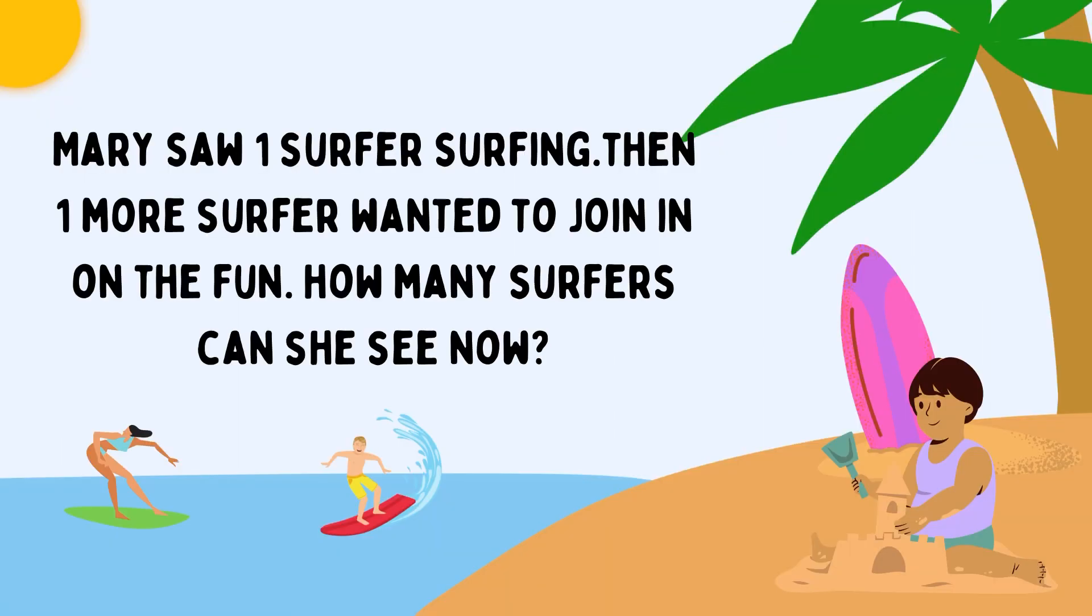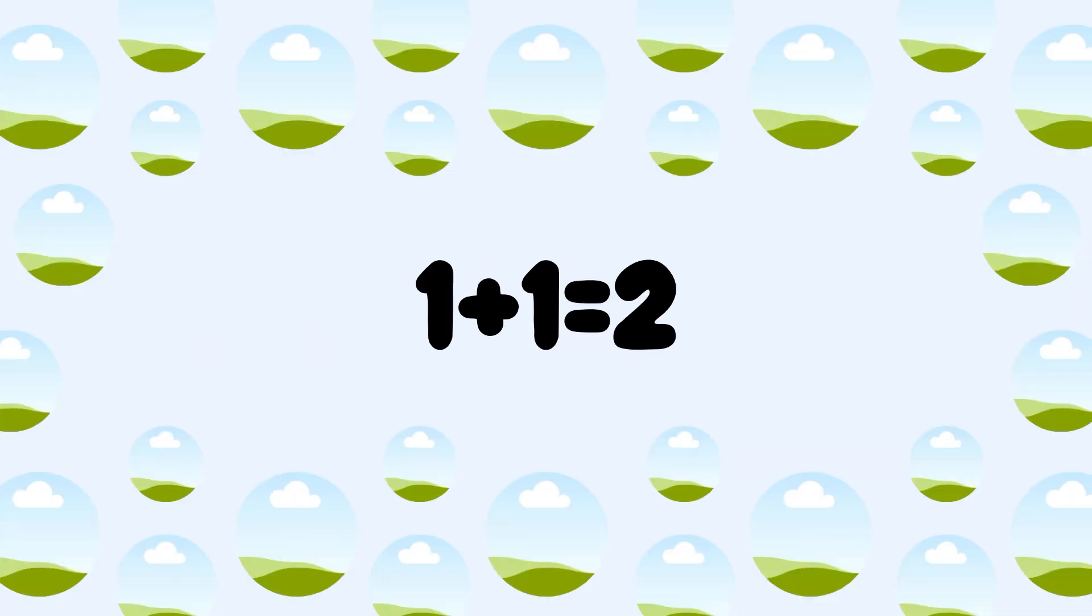Next one. Mary saw 1 surfer surfing. Then 1 more surfer wanted to join in on the fun. How many surfers can she see now? 1 surfer plus another surfer. 1 plus 1 is equal to 2. Total 2 surfers on the beach.